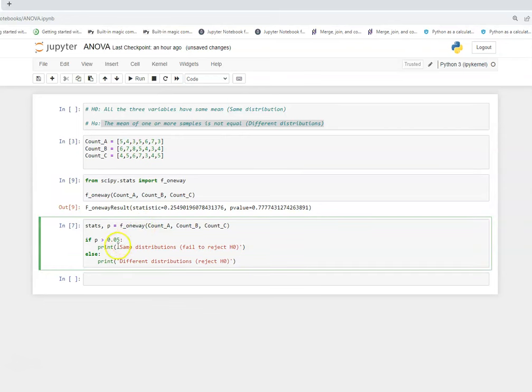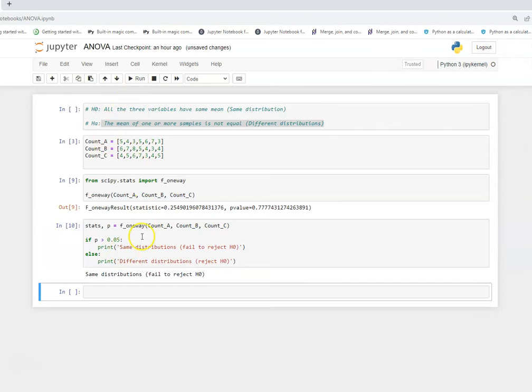So we have created an if-else statement mentioning if the p-value is greater than 5%, then the distributions are same, that is it fails to reject the null hypothesis. And in other case, if it would have been less than 5%, that means it doesn't have enough confidence and it says that the distributions are different or at least one of the distributions is different and we reject the null hypothesis. So let's execute this and we get the distributions are same.